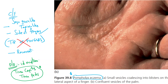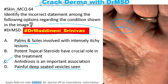ID eruptions are an important differential diagnosis for pompholyx. In treatment, potent topical steroids have a very important and crucial role — this is also a correct statement. Option C is wrong because pompholyx is associated with dyshidrosis, but not anhidrosis. This is a very important point to be remembered.